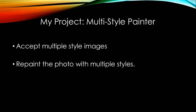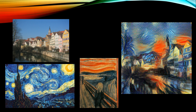In my project, I'll first implement Neural Style Painter based on the paper, and then modify the painter program so that it accepts multiple style images and paints the photo with several styles merged together. This is an example of repainting a photo of houses using two styles, one from Starry Night and one from The Scream. Eventually, we want to achieve the effect of the picture on the right.